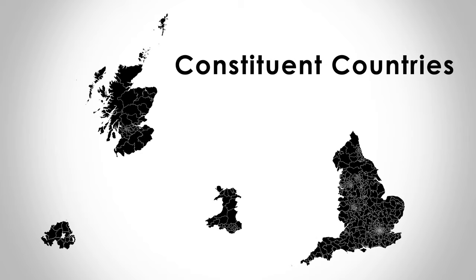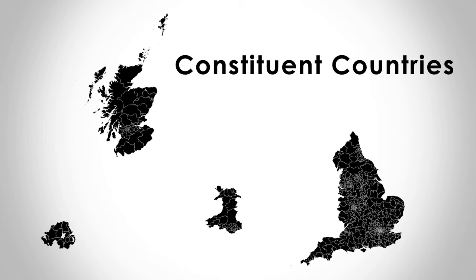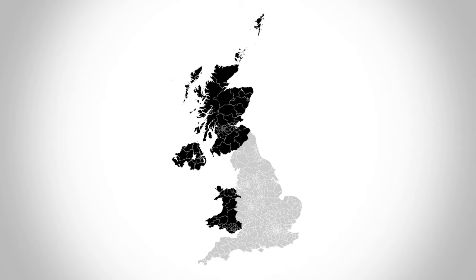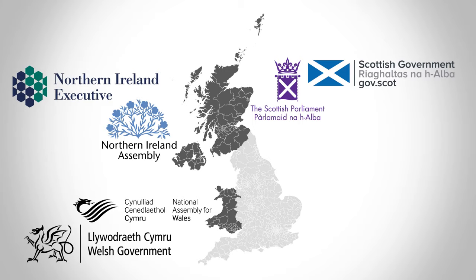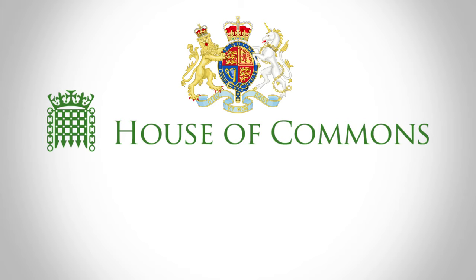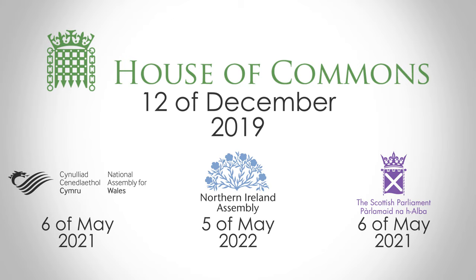The United Kingdom consists of four constituent countries, or nations: England, Wales, Scotland, and Northern Ireland. Three of the four constituent countries have their own devolved parliaments and governments. Devolution differs from federalism in that the devolved powers ultimately reside in the central government, thus the state remains a unitary state. Legislation creating devolved parliaments can be repealed or amended by the central government. The devolved parliaments hold separate elections from the National Parliament.